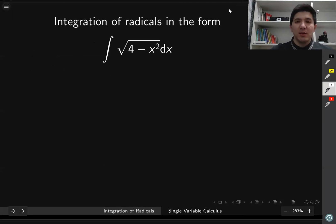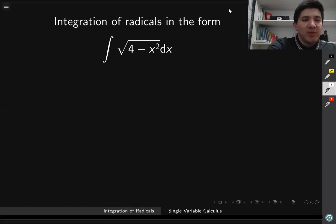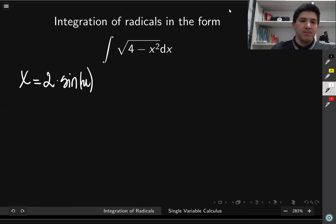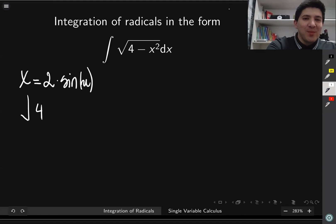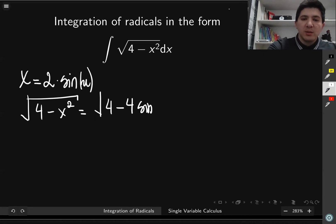Let's start from the first one. We're given the integral of the square root of 4 minus x squared. We need to figure out a substitution for x that allows us to get rid of the square root. We might use the trigonometric substitution: x equal to 2 times sine of u. If we write down the square root of 4 minus x squared, it becomes the square root of 4 minus 4 sine squared of u.